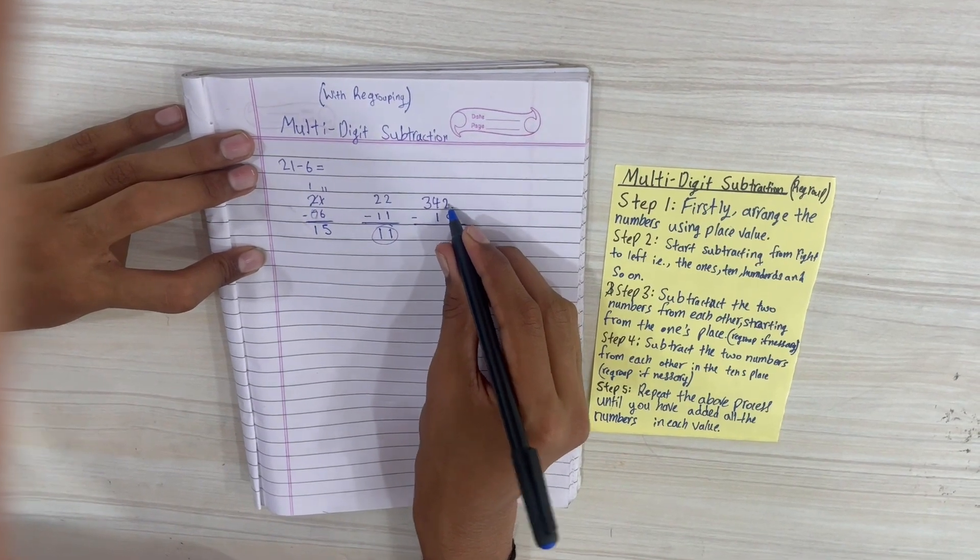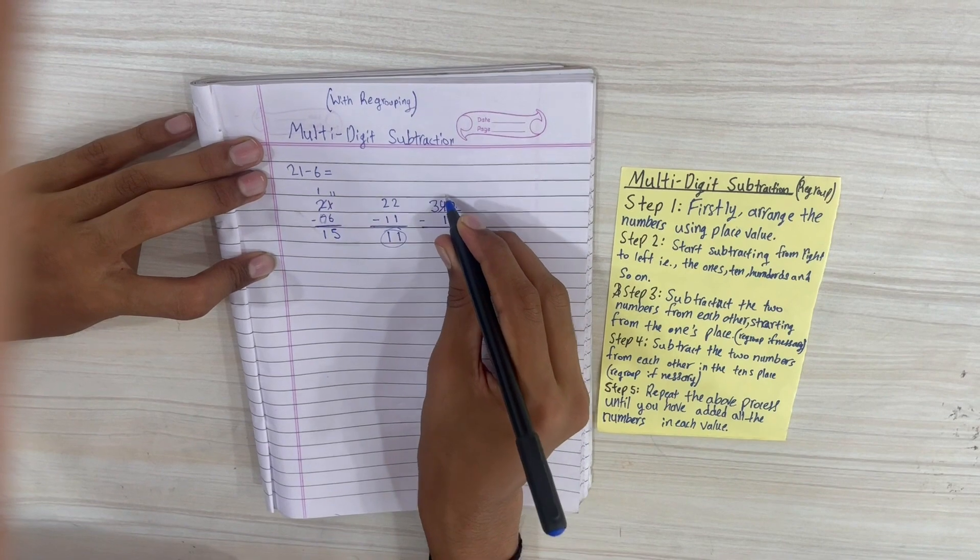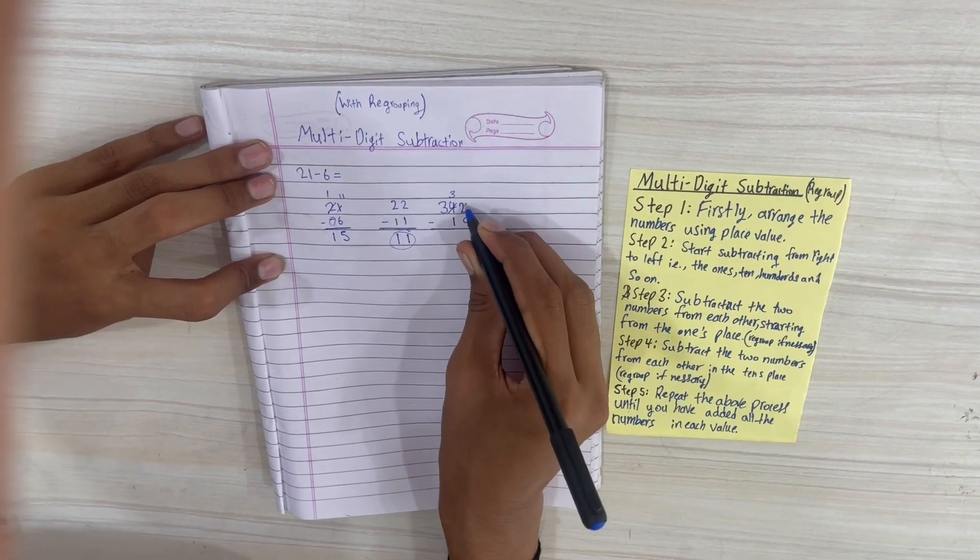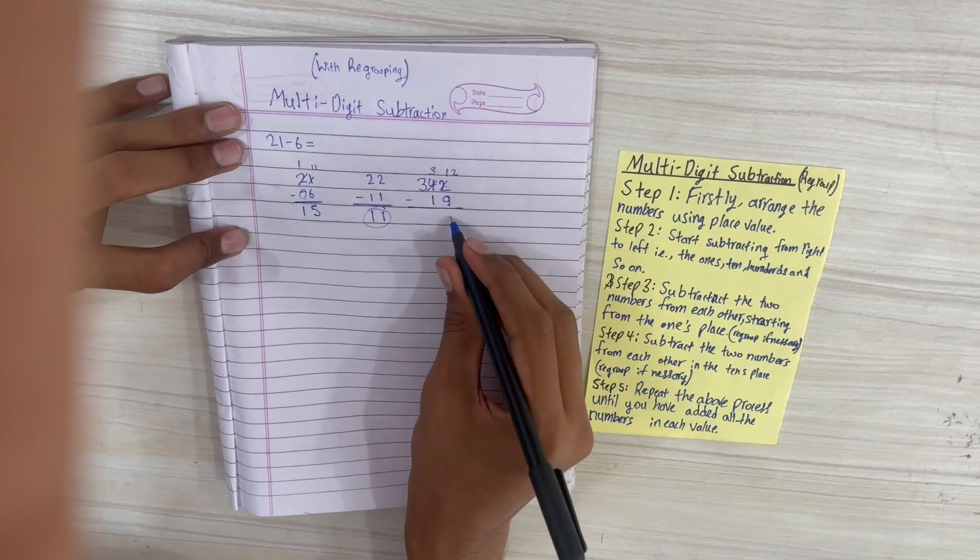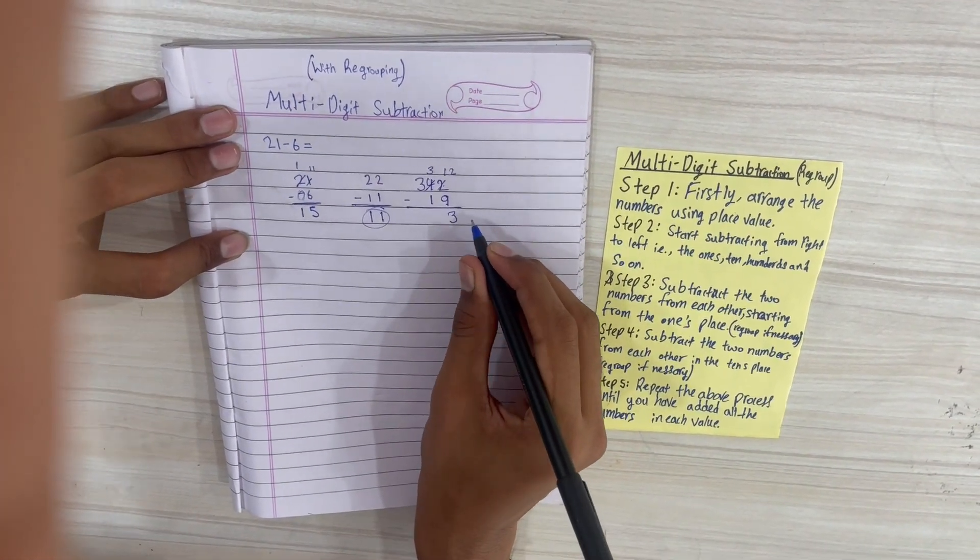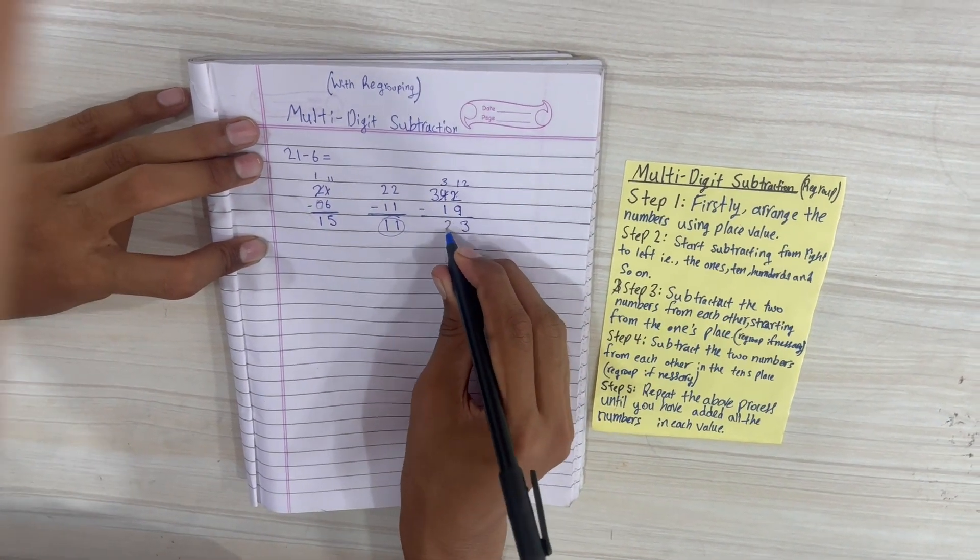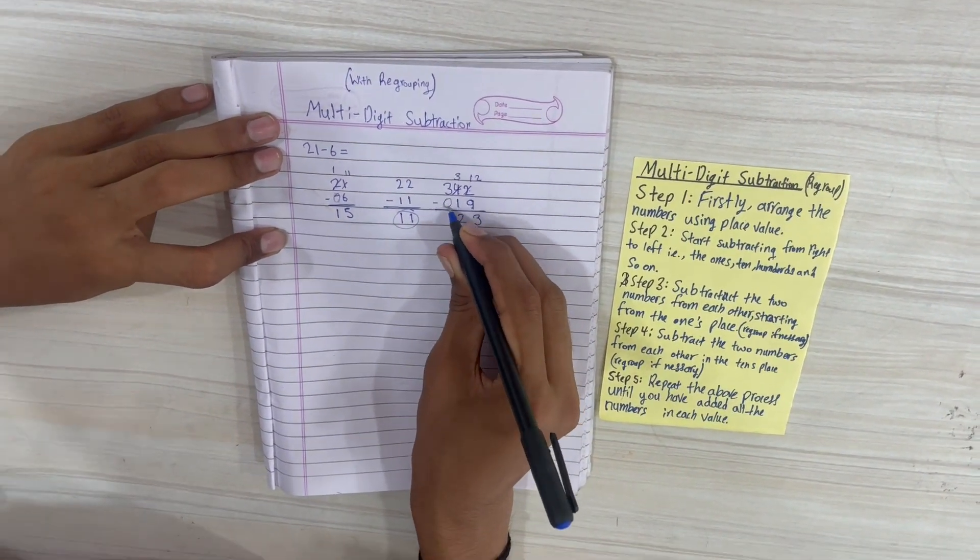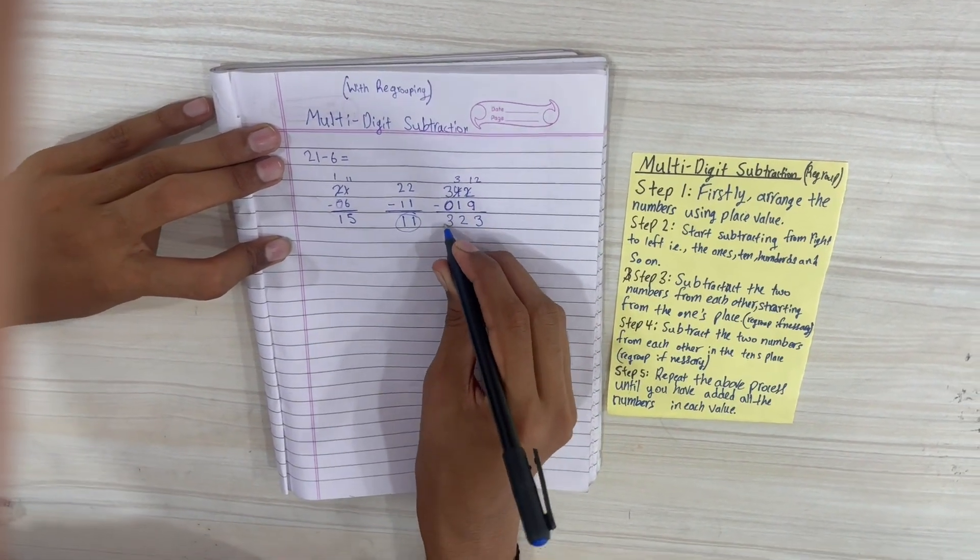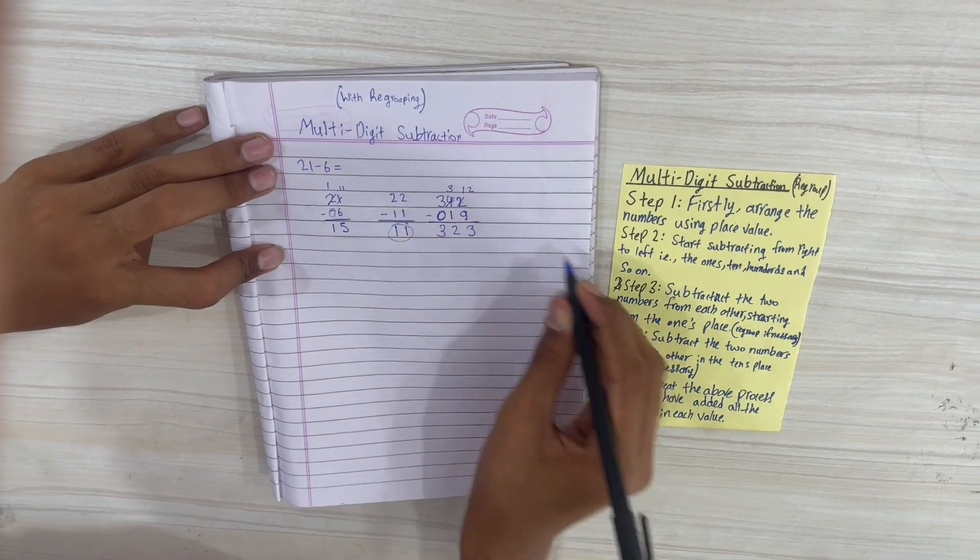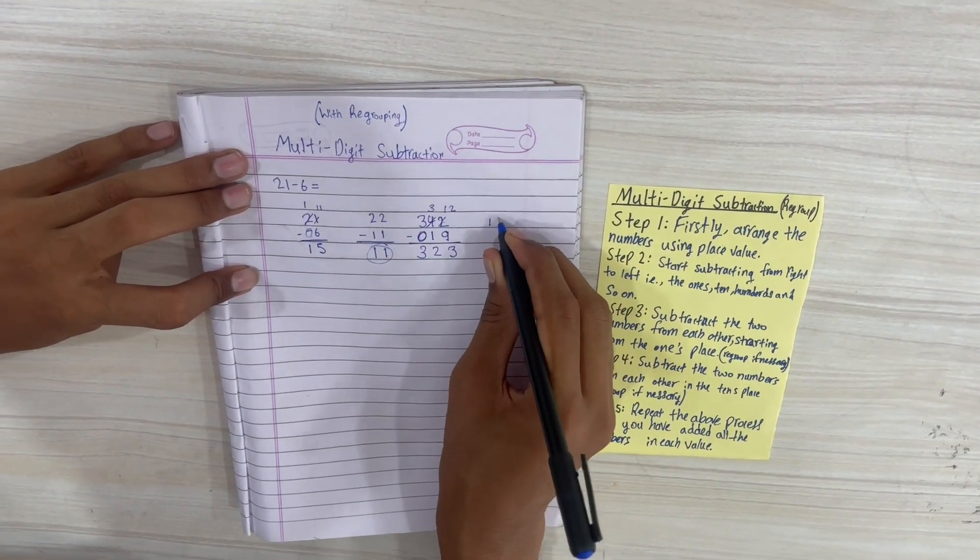2 minus 9 is not possible, so we will get rid of 4, turn it into 3, turn 2 into 12. So 12 minus 9 is equal to 3, and 3 minus 1 is equal to 2. In the last place we put a 0, and 3 minus 0 is equal to 3. So the answer is 323.